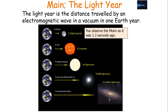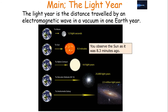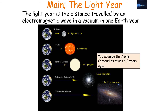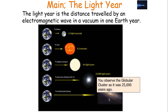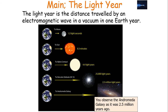For example, because the Moon is 1.3 light seconds from the Earth, when you observe the Moon, you observe it as it was 1.3 seconds ago. The same for the Sun, but it's 8.3 minutes. The same for Alpha Centauri, the nearest star to the Earth which is not the Sun, which is 4.3 light years away — you observe Alpha Centauri as it was 4.3 years ago. You observe the Hercules Globular Cluster as it was 25,000 years ago. And you observe the Andromeda Galaxy, the nearest galaxy to us which is not the Milky Way, as it was 2.5 million years ago, as it's 2.5 million light years away.